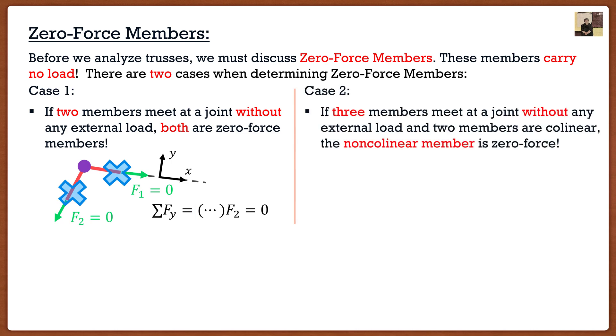The second case is if we have three members that meet at a joint, again with no external load, and two of the members are collinear, meaning they're parallel with each other, and the third member is non-collinear. That third member is actually a zero-force member. Now again this is a bunch of word garbage. If you guys want to see what this looks like, it would look something like this.